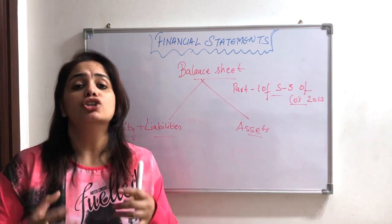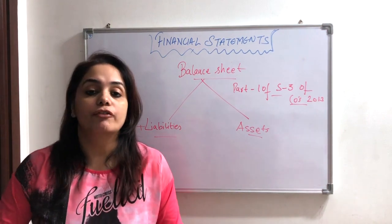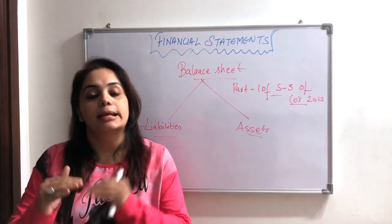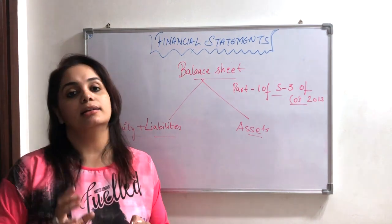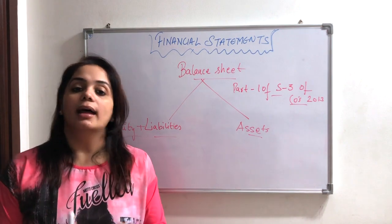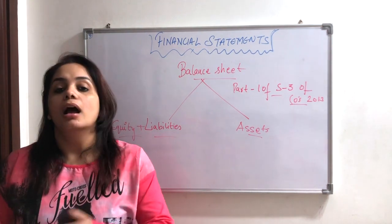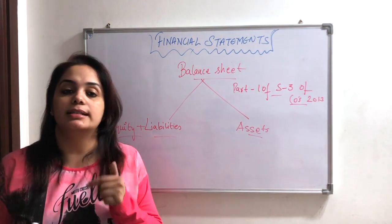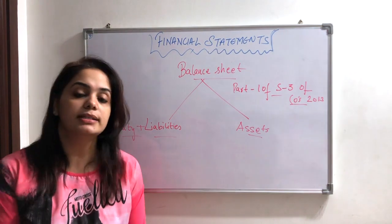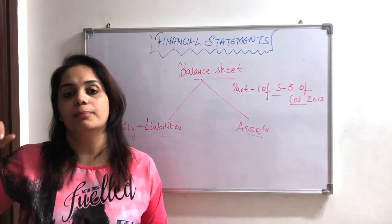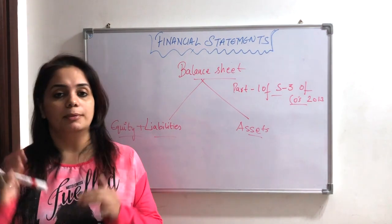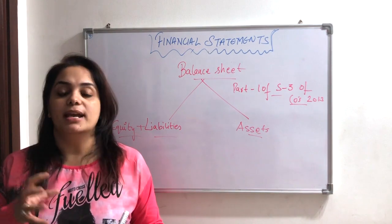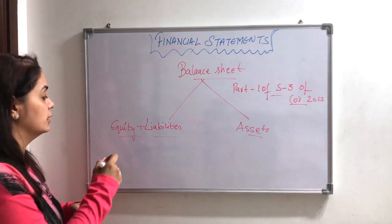Capital is a liability for the company because the company and the owner are separate entities — we always treat capital as a credit. It is said that a company is altogether a separate entity, apart from its owners. So capital is placed on the liability side. Now when many people are putting in capital — in big public limited or private companies — people put money by way of shares, and that money is basically called equity.